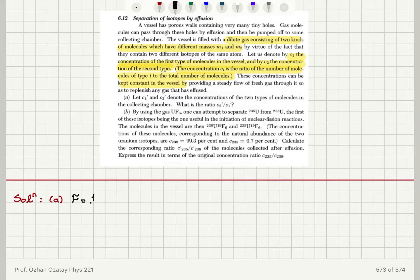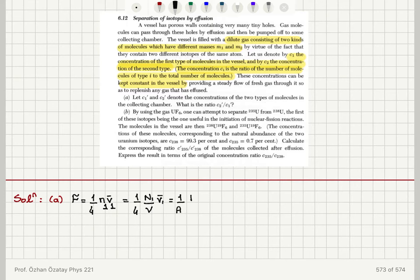Now we have a flux of molecules — that is (1/4) N V-bar — and for the first type of molecules: (1/4) N1 V1-bar. This equals (1/4) times the number of molecules of type 1 divided by the total volume, multiplied by V1-bar. On the collecting side of the hole, this equals plus (1/A)(dN1/dt), positive because we are counting molecules accumulating in the collecting chamber.